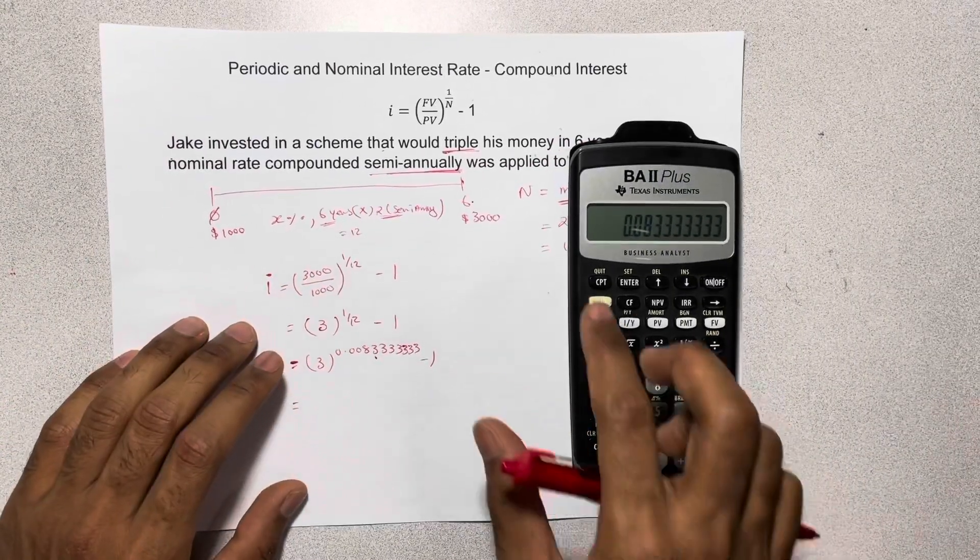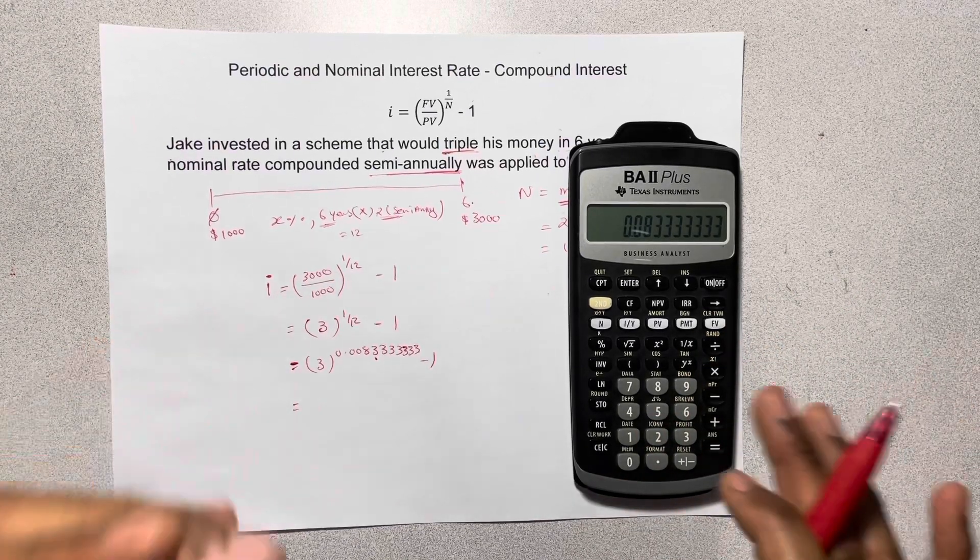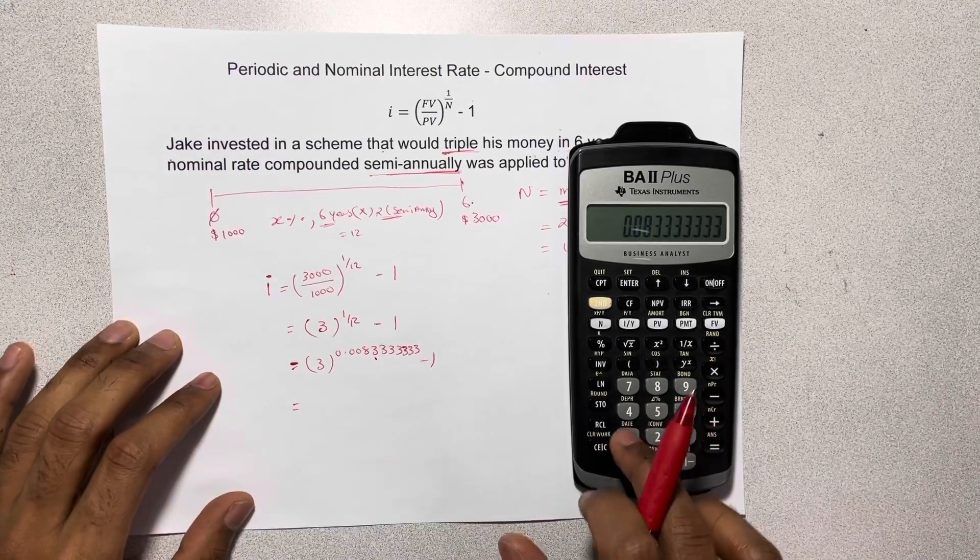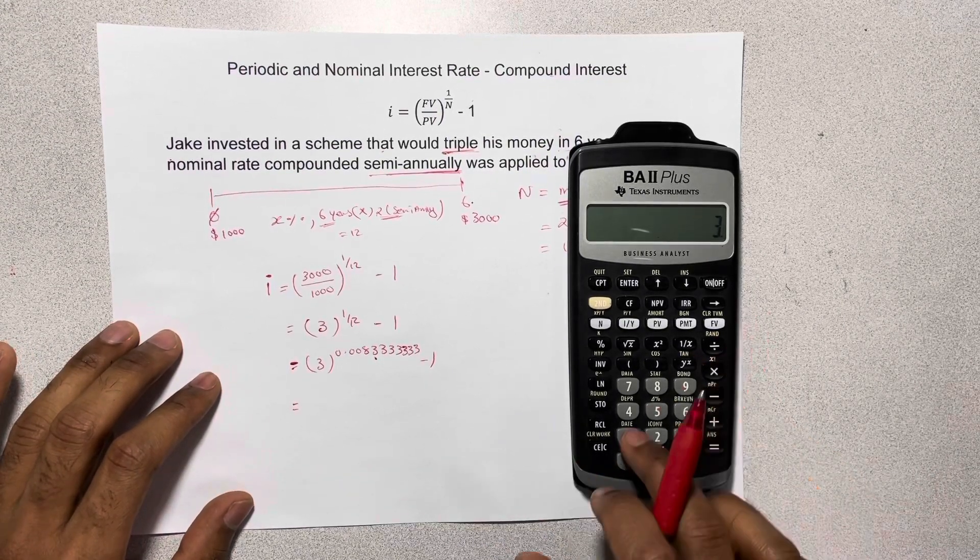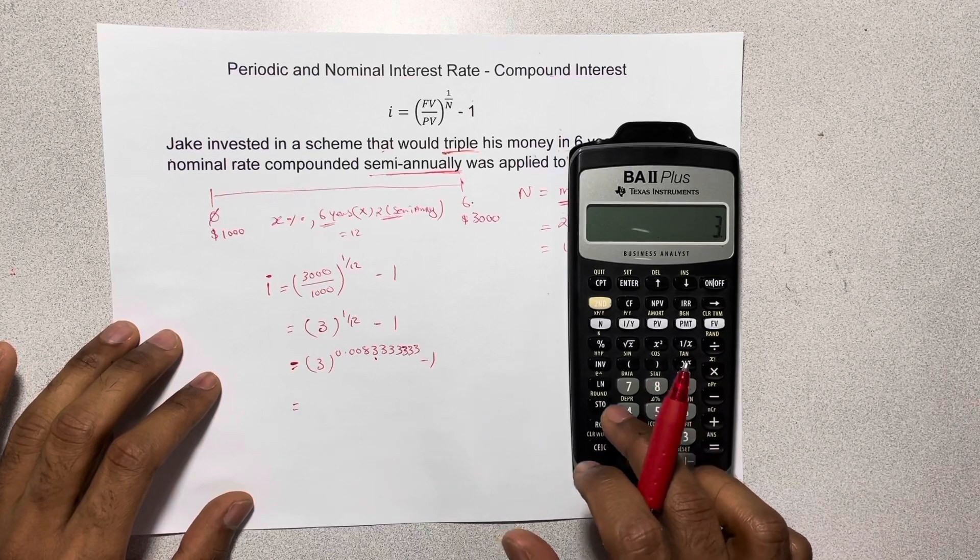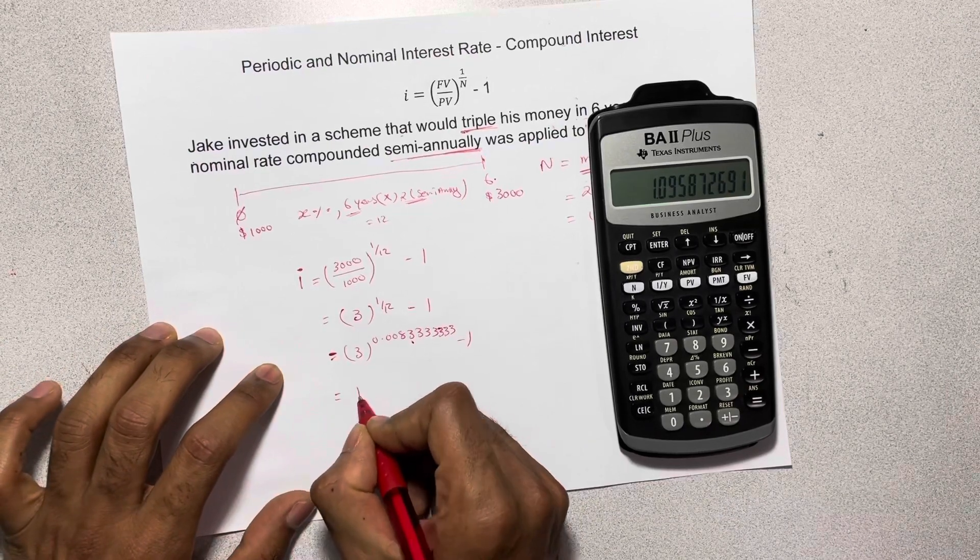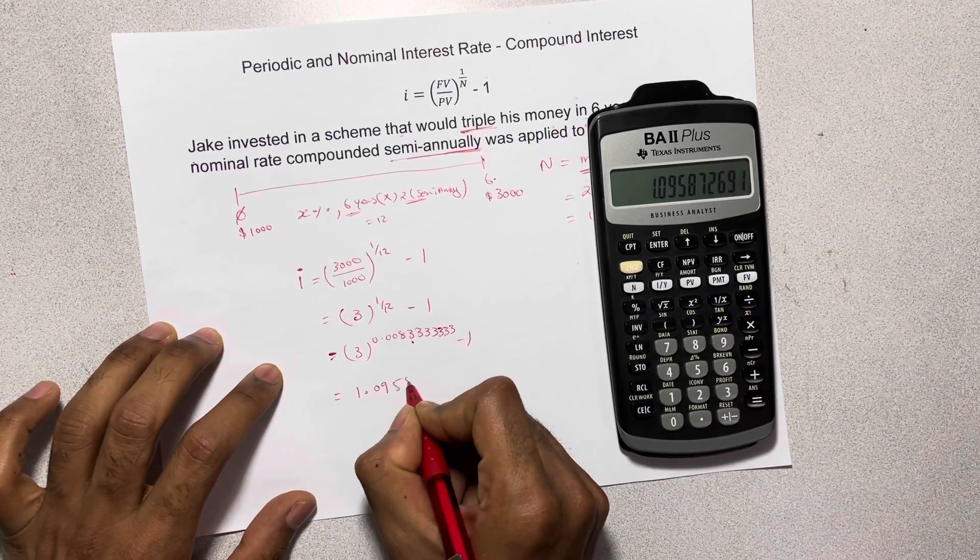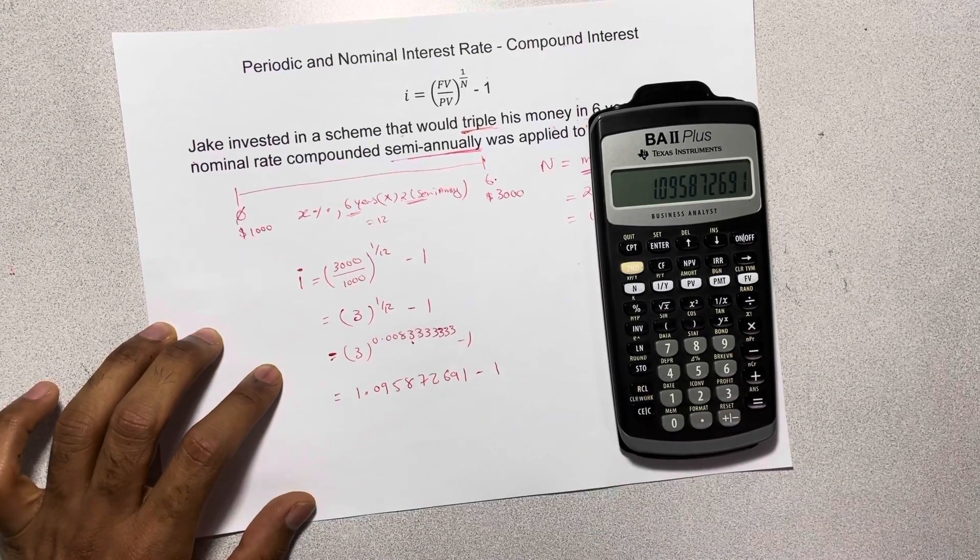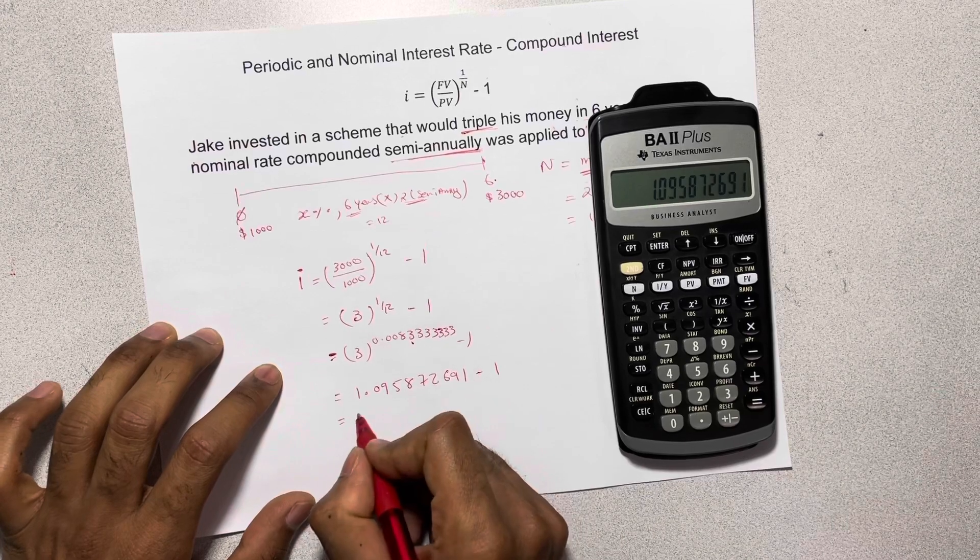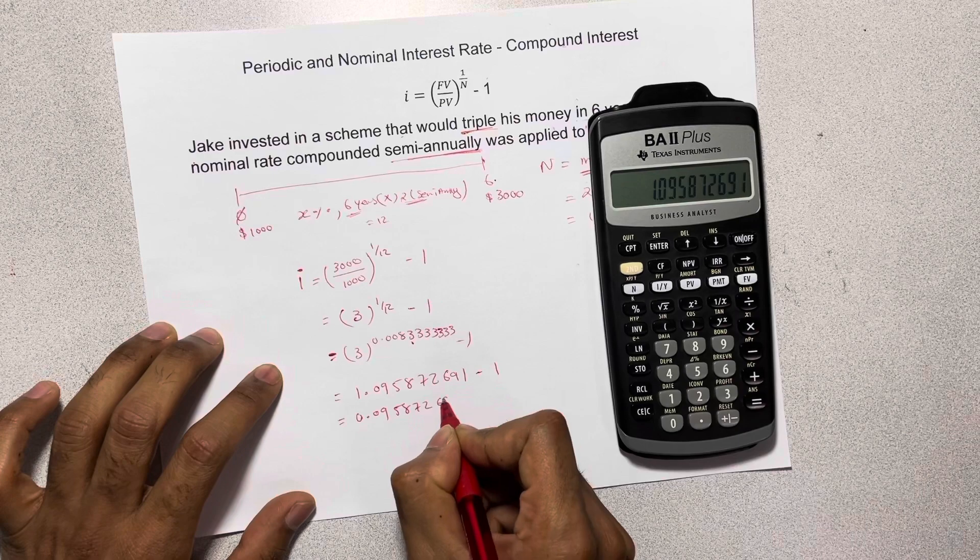Then we just take 1 divided by 12, which is 0.08333333, and I'm just going to store that as one of my numbers. And then we just take 3 to the power of 0.08, which gives us 1.095872691 minus 1. And if we subtract minus 1 from it, we get 0.095872691.